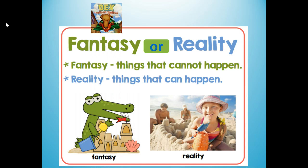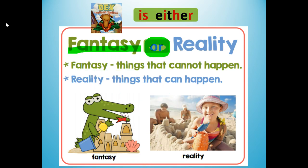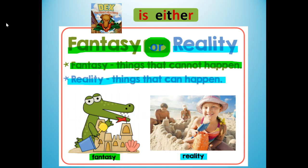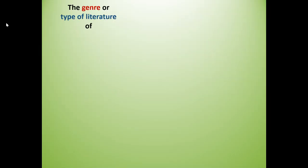Dex: The Heart of a Hero is either fantasy or reality. Fantasy is things that cannot happen, and reality is things that can happen. The genre, or type of literature, of Dex: The Heart of a Hero is fantasy.